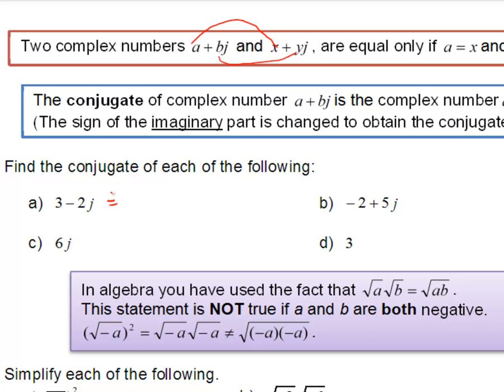The conjugate of 3 minus 2j is 3 plus 2j. The conjugate of minus 2 plus 5j is minus 2 minus 5j. Notice only the imaginary term is changing.